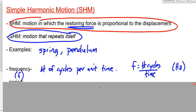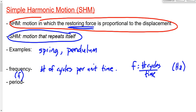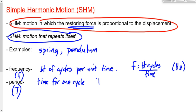What goes with frequency? Period. Period, given the symbol capital T, is the time for one cycle. In circular motion it was the time for one revolution; now it's the time for one cycle. In the context of simple harmonic motion, it's the time to go from one spot through a complete cycle and back to where it started.